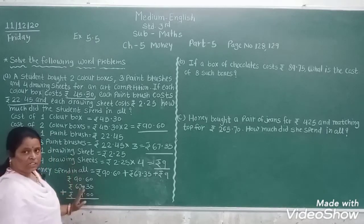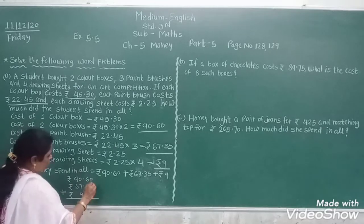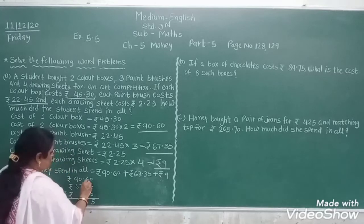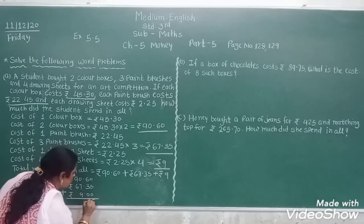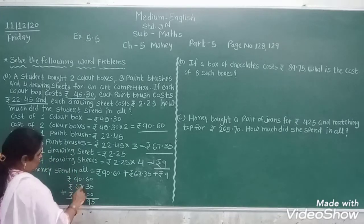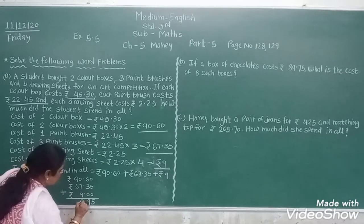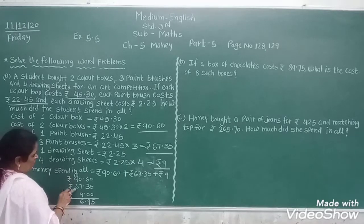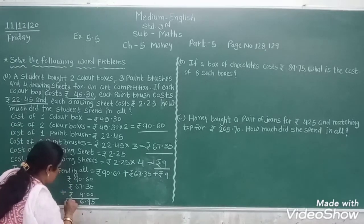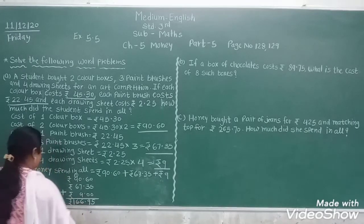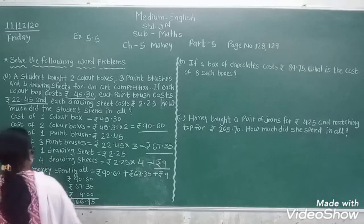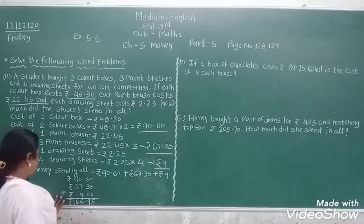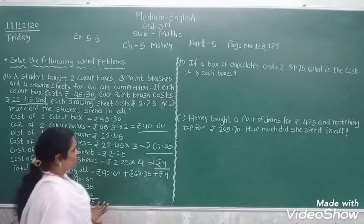Now we add all things. Adding the paise column: 0, 0, 0. Adding next column: 5, 5 — that's 10, write 0, carry 1. Adding: 6, 7 and 9 gives 16, carry 1. Continuing: 9 and 1 is 10, and 6 is 16. So the total is Rs. 166.95 paise.